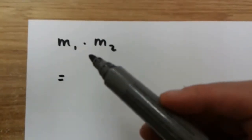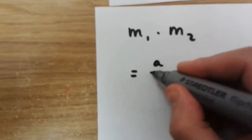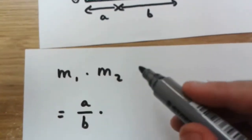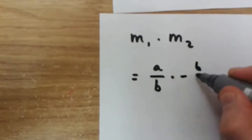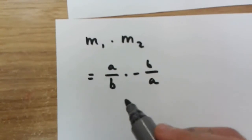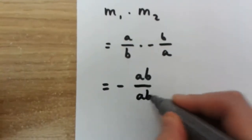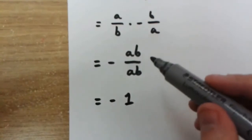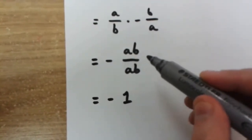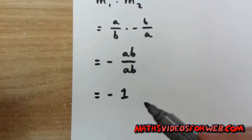Now let's multiply m1 by m2 to see what we get. We know that m1 is equal to a over b, and m2 is equal to minus b over a. So we're going to multiply a over b by minus b over a. If we do this, we get minus 1, because the numerator and denominator are the same in this fraction. So we've proven that m1 multiplied by m2 is equal to minus 1.